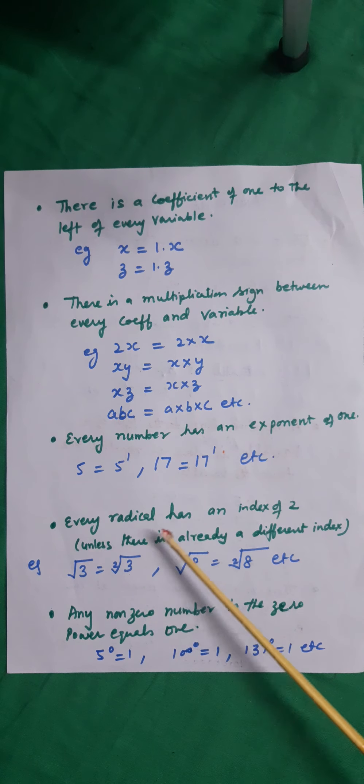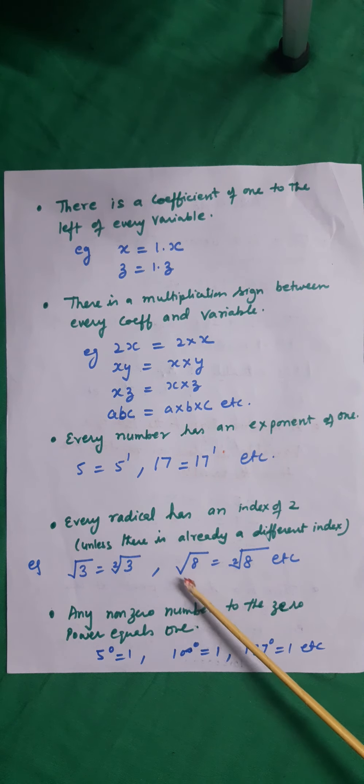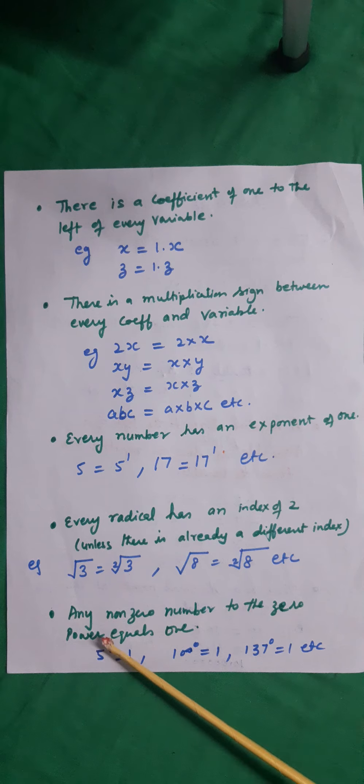Next, every radical has an index of 2 unless there is already a different index. Root 3 means 2 root 3. The 2 we never write, it is invisible. Root 8 is actually 2 root sign 8.